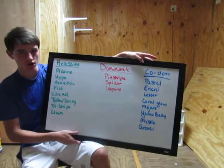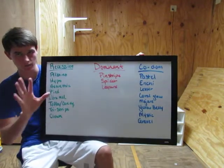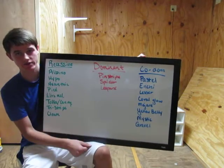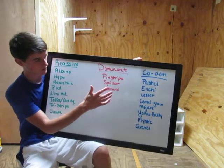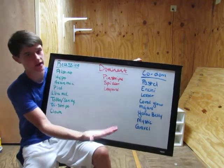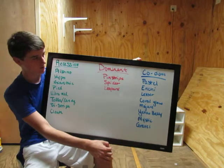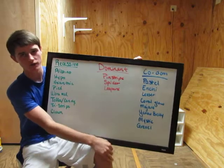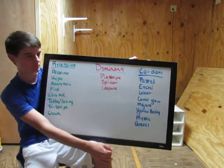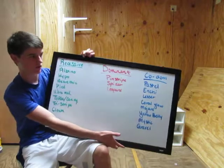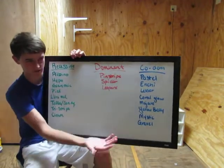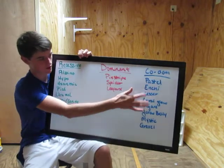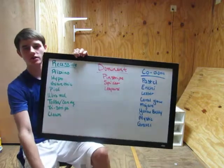Whereas in dominant and codominant, you don't have to have the gene on both sides — it can just be on one. However, having it on both sides increases your chance of passing it on. Dominant and codominant are passed on roughly half the time. So if you breed a spider, a dominant gene, to a normal, half the clutch will be normal and half will be spider. If you breed a pastel, which is codominant, to a normal, it's the same — half will be pastel and half will be normal. The difference between the two columns is that in dominant genes, there is no super form.